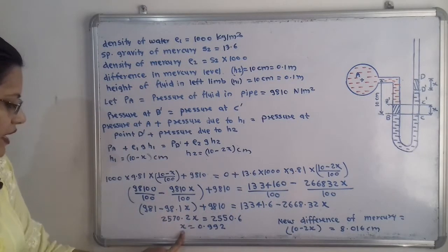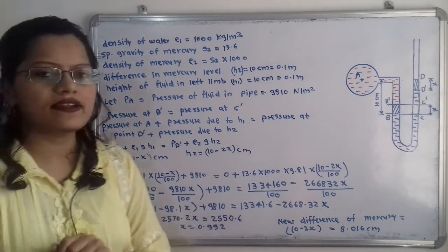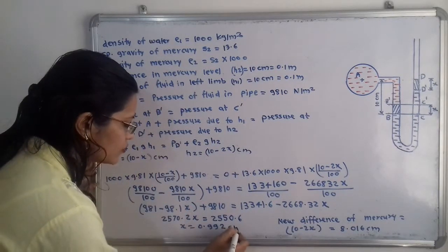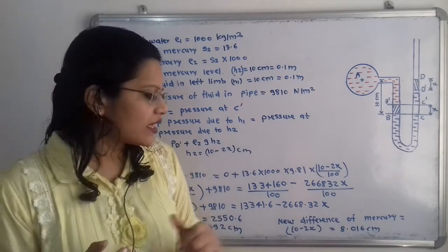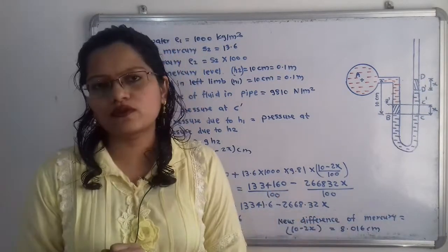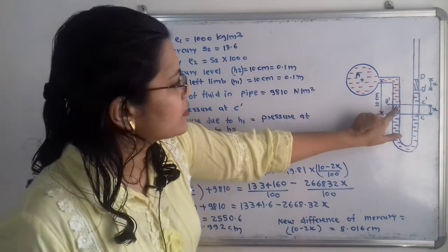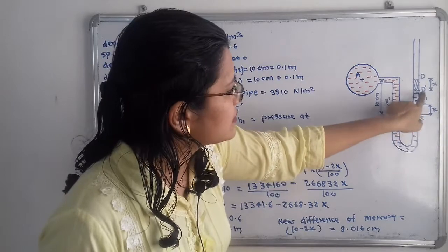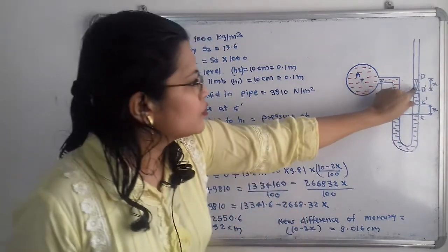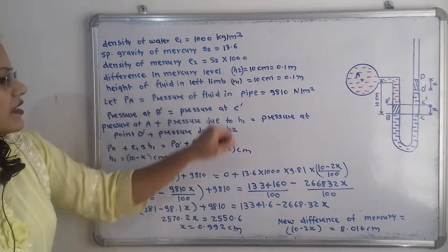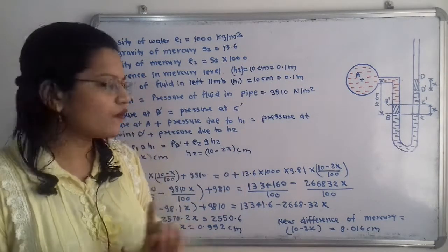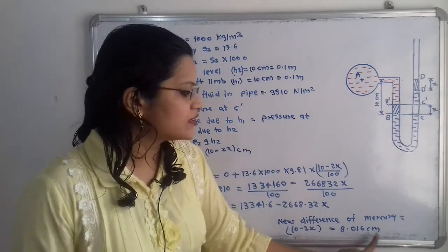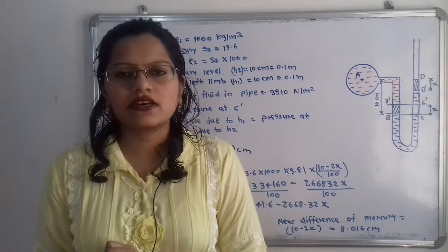The value of x is 0.992 centimeters. The new difference in mercury level is h₂ = 10 − 2x = 10 − 2 × 0.992 = 8.016 centimeters. This is the final answer for the new difference in mercury level.